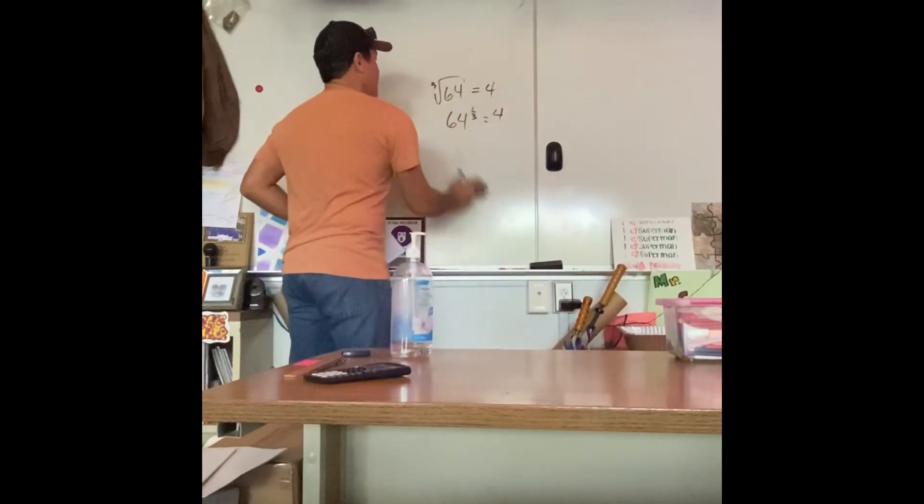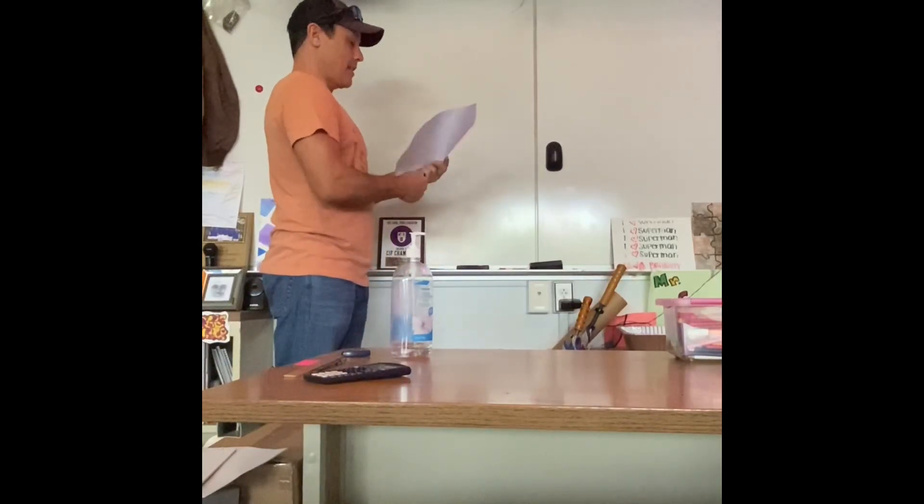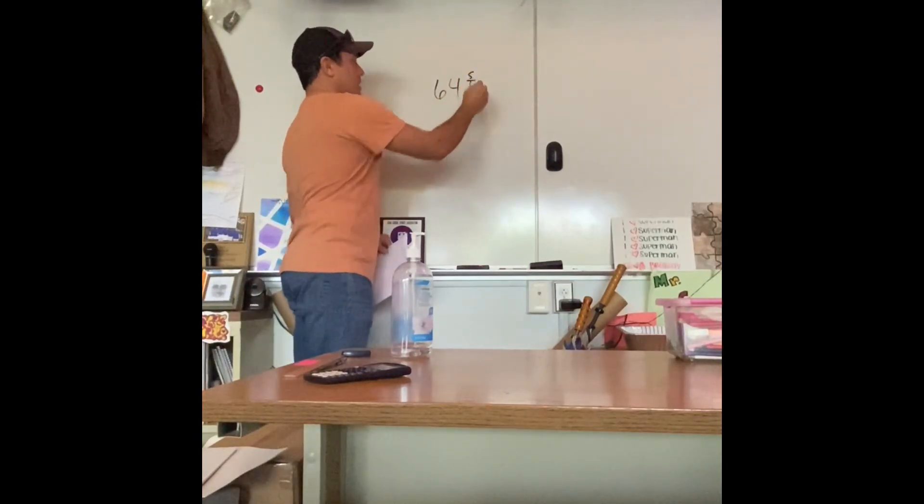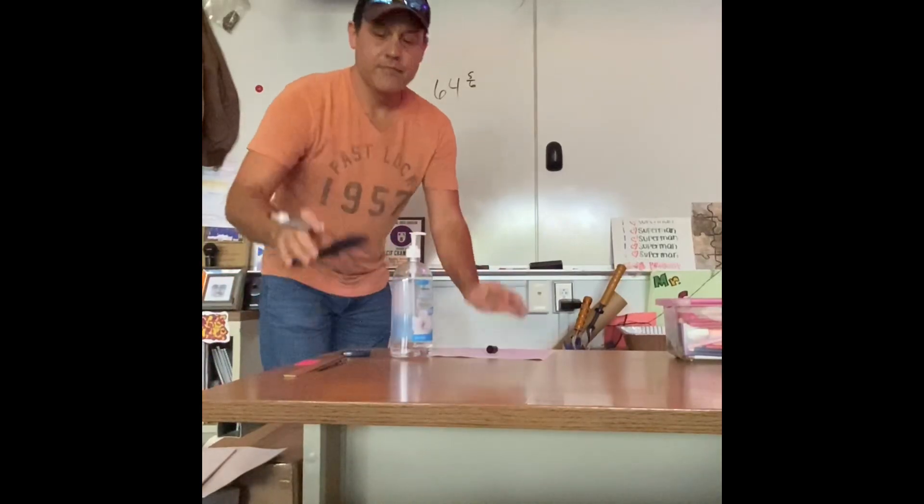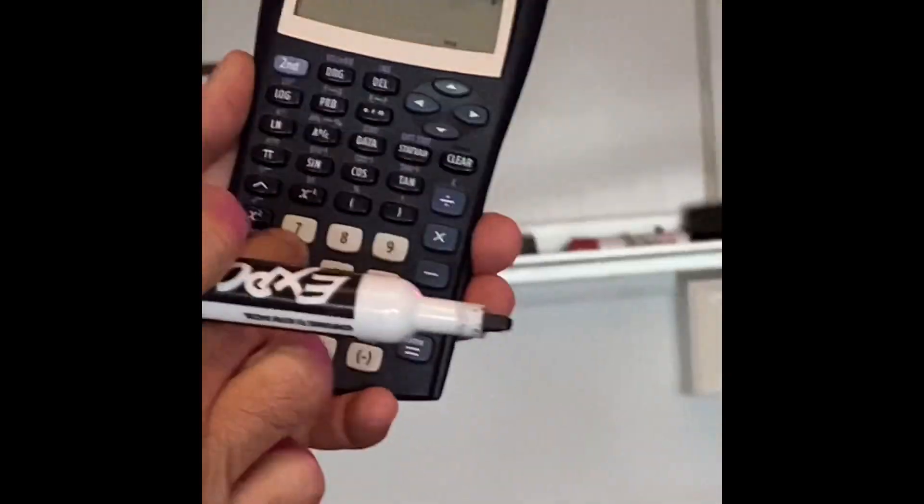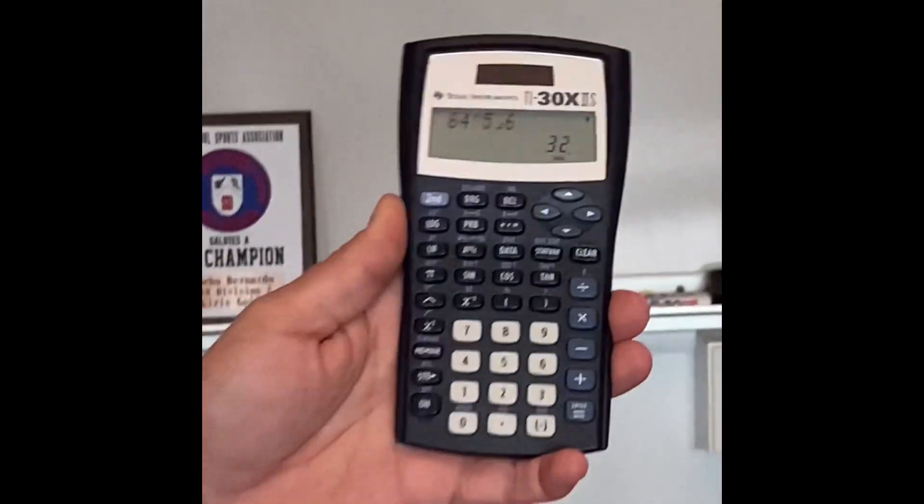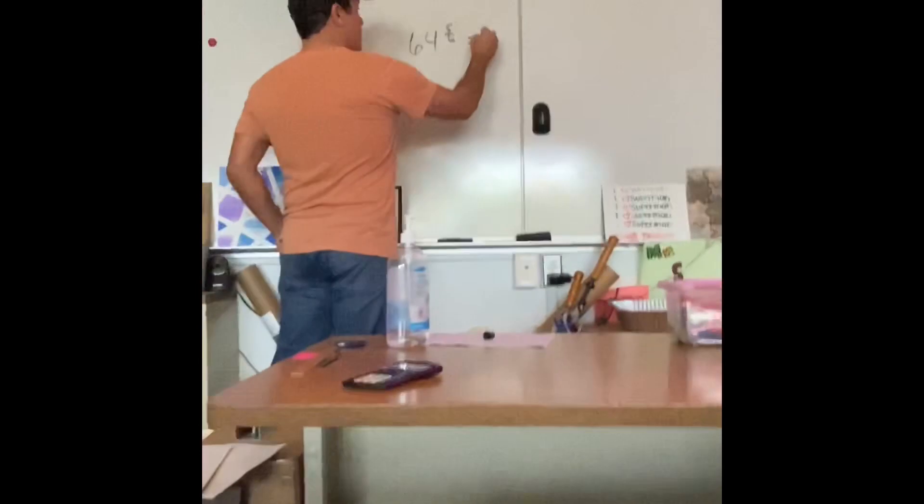However, what if things get a little scary and you get something like this? 64 to the 5 sixth. Well, you could put it in the calculator. You can do this at home. So, 64 raised to the 5 fancy button 6. Oh, yeah, baby. 32. So this equals 32.